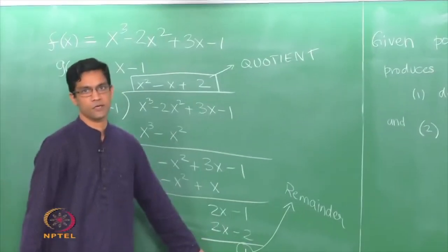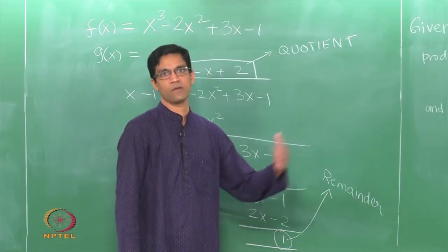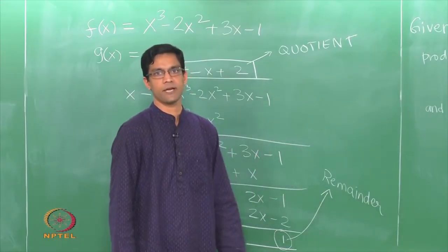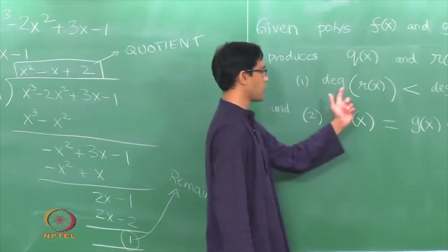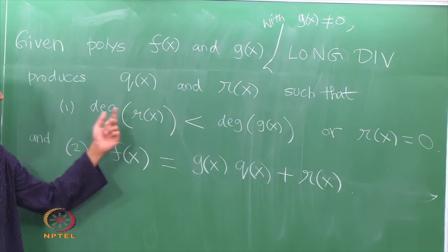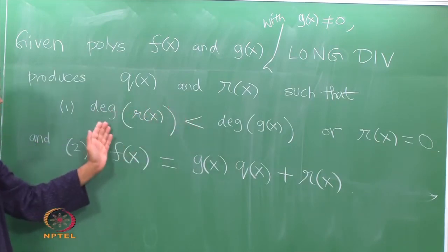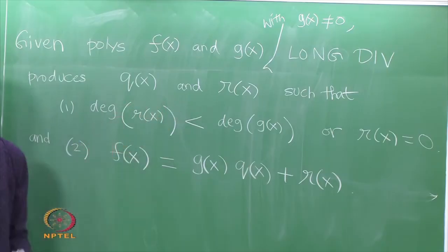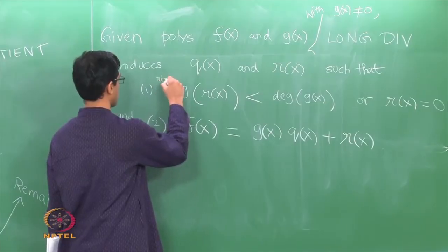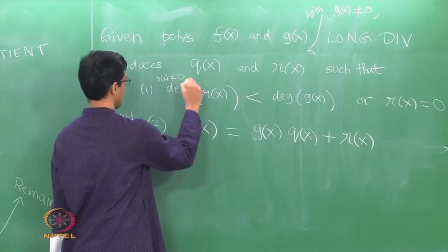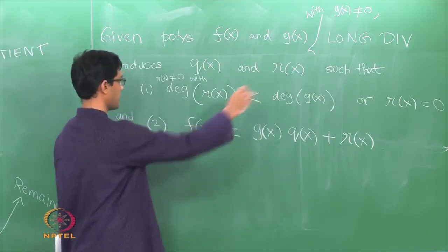In our case the remainder was something nonzero, but it could very well happen that it is an exact division and the remainder is just 0. Observe that degree is not defined if the polynomial is 0, so I am talking about either the remainder is 0 or it is nonzero and has degree strictly smaller than the degree of G of X. So R of X nonzero with degree strictly smaller, or the remainder is just 0.